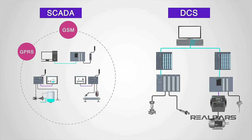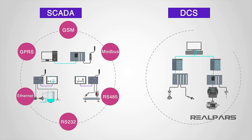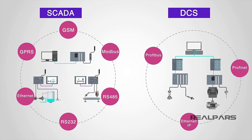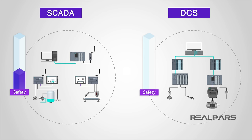Communications within a SCADA system can vary widely and have adapted to changing technologies. While the DCS has also adapted, there are still some proprietary communications that can be challenging. It has been said that if safety is a priority, then the DCS is the route to go. However, nowadays, with the abundance of safety processors, a SCADA system may also be selected.